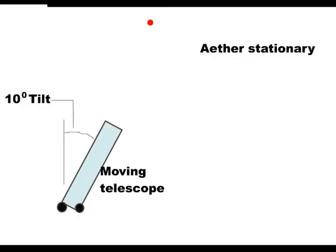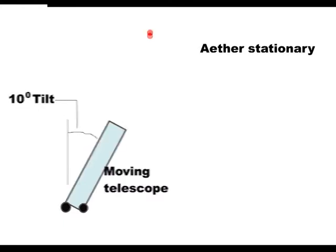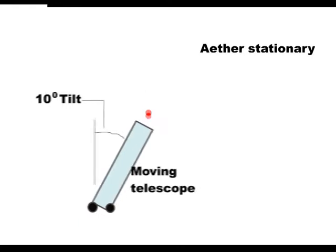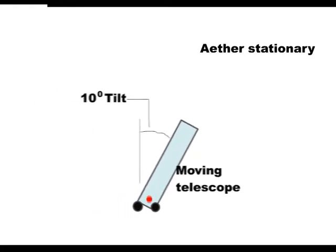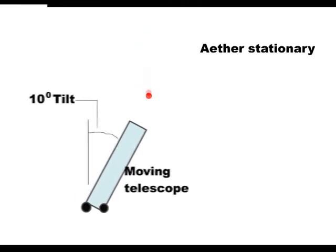However, if the telescope is tipped further, say 10 degrees, then the starlight will then be visible again in the eyepiece. It has to be tipped further because the light is now slower when in the telescope.